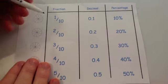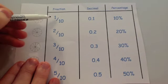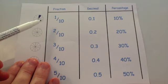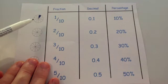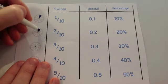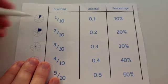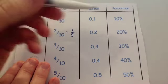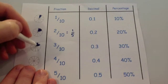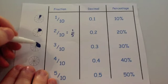Now let's look at tenths. One tenth: shading one section gives 0.1 or 10%. Looking across the tenths: 10%, 20%, 30%, 40%, 50%, 60%, 70%, 80%, 90%, 100%. Two tenths is two sections — that's the same as one fifth — so 20%. Three tenths is three sections: 30%.